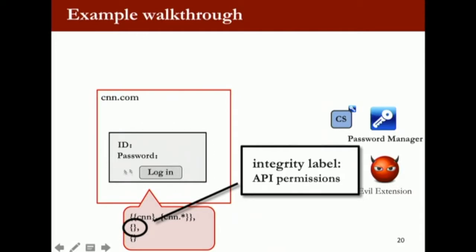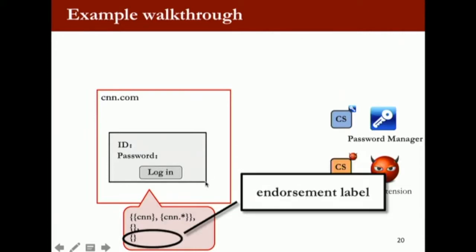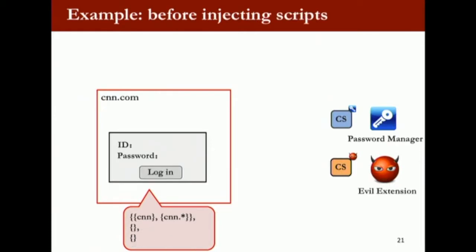The last component is what we call the endorsement or declassification label. This says that currently I know CNN's secret, but I can turn around and declare that I actually don't have any secret at all. That's the action of declassification. I'll show you how this works in a moment. When the page gets loaded, based on CSP and where the DOM is loaded, this policy is semi-automatically generated.